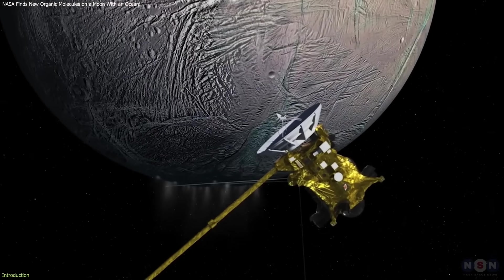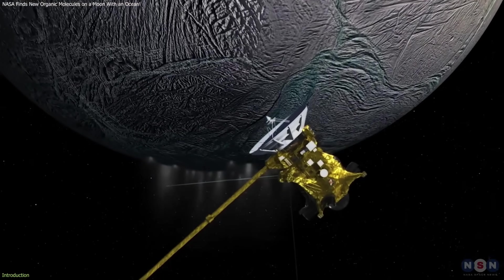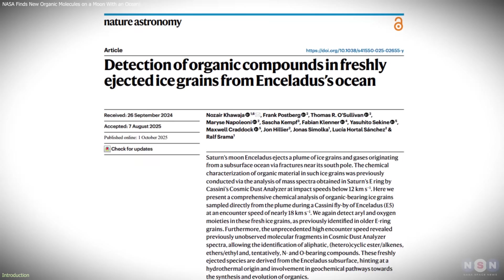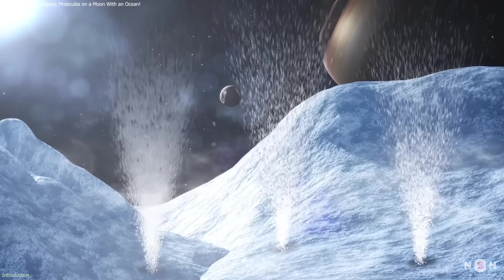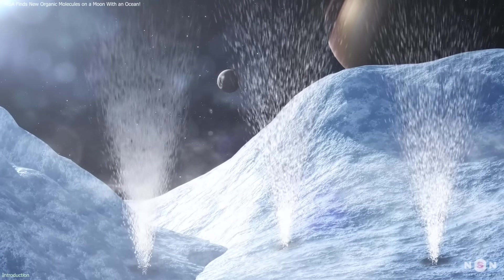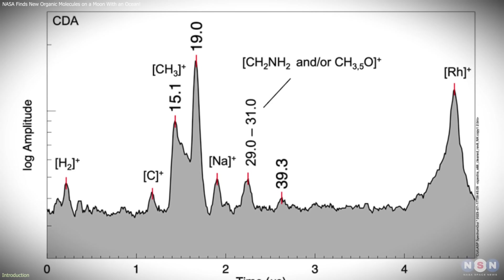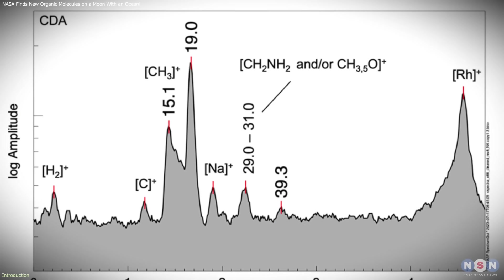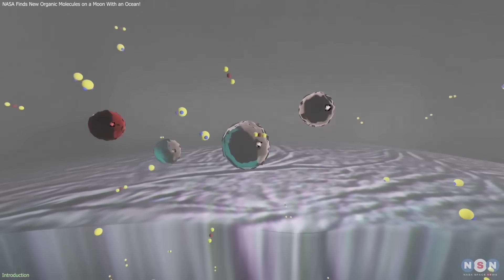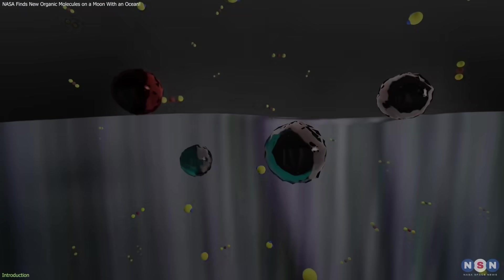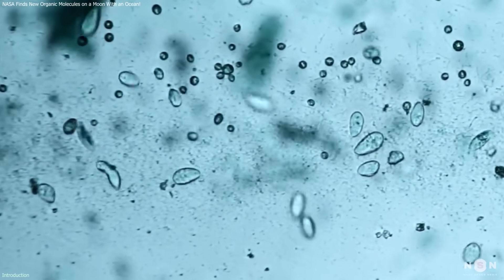Scientists have taken another close look at Cassini's plume data from Saturn's moon Enceladus, and the results are clearer than ever. Fresh ice grains, collected just minutes after they were ejected from the moon's ocean, contain new organic molecules that were never identified before. These findings offer the most direct glimpse yet into the chemistry of a subsurface world long considered potentially habitable.